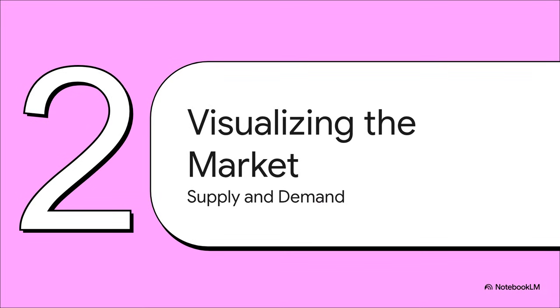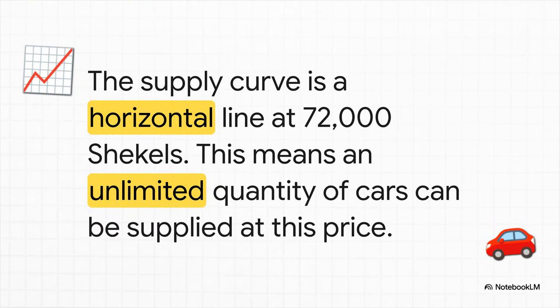So we have our number, but what does that actually look like from an economic point of view? How would an economist actually draw this on a classic supply and demand graph? This is actually pretty cool. On a standard graph with price going up and down and quantity going side to side, the supply for this car is just a perfectly flat horizontal line. It sits right at that 72,000 shekel mark. And what that means is, at this price, the market can basically get its hands on as many cars as people want to buy. The supply is, for our purposes, unlimited.